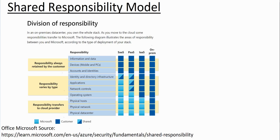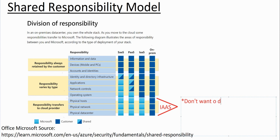Let's talk about use cases for IaaS versus PaaS versus SaaS. Starting with Infrastructure as a Service — IaaS is the solution when you don't want to deal with hardware. Rather than hosting things on-premise and dealing with the headaches of hardware, you utilize infrastructure as a service.